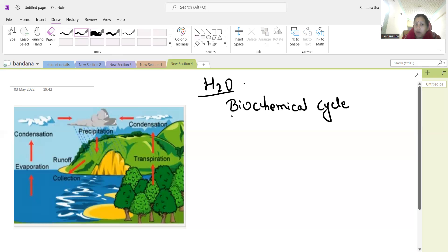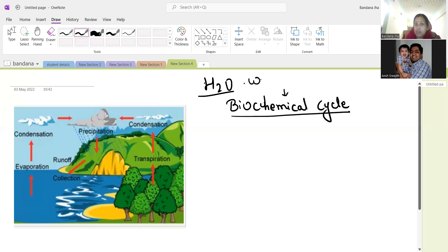Water cycle involves in the flow or circulations of water through different layers of my ecosystem. This is also known as hydrological cycle.